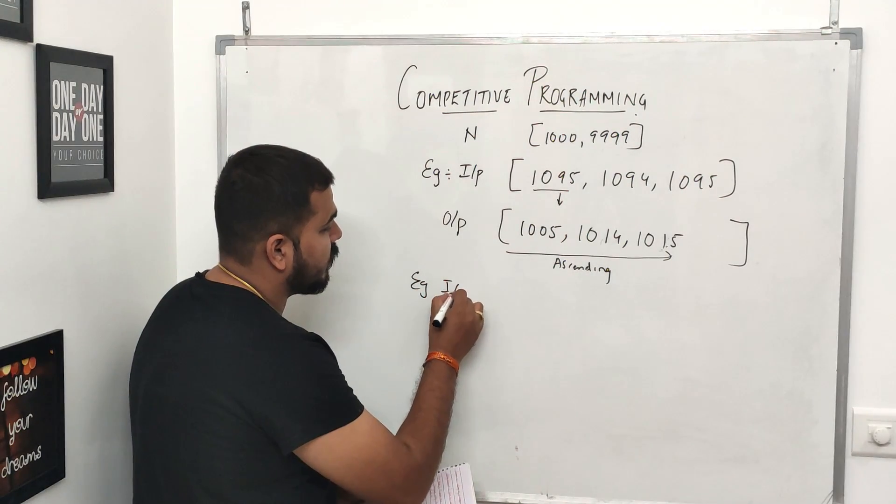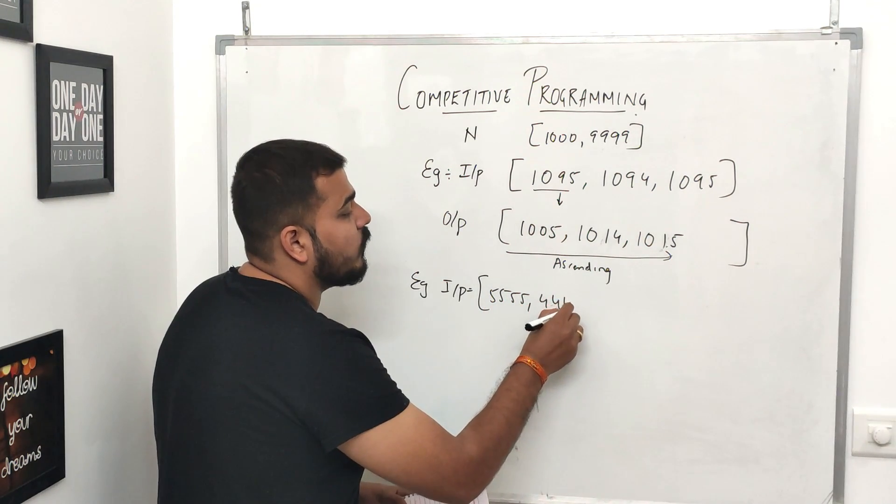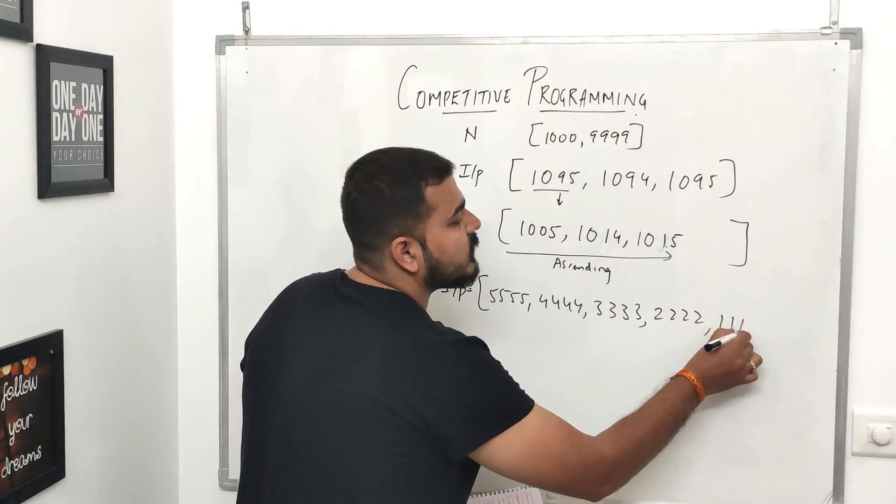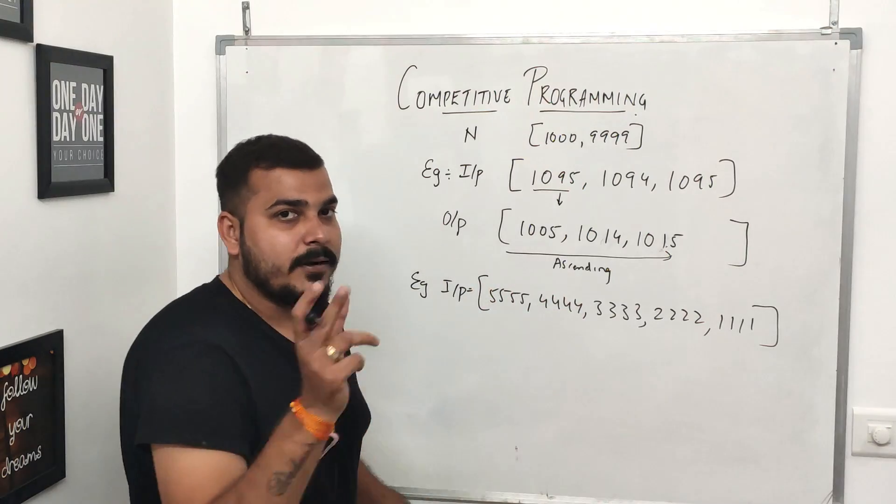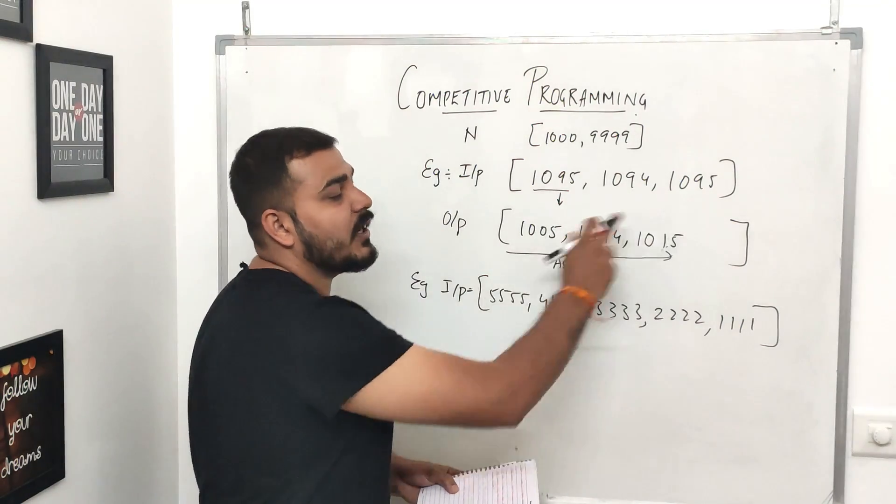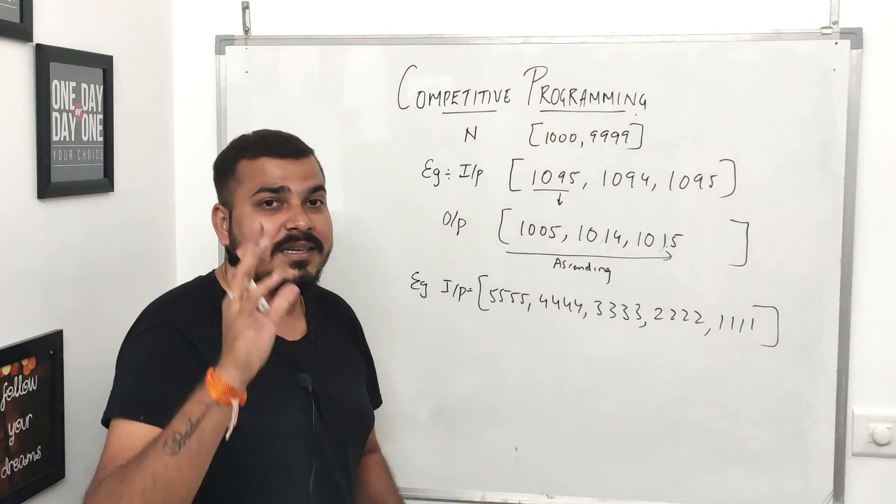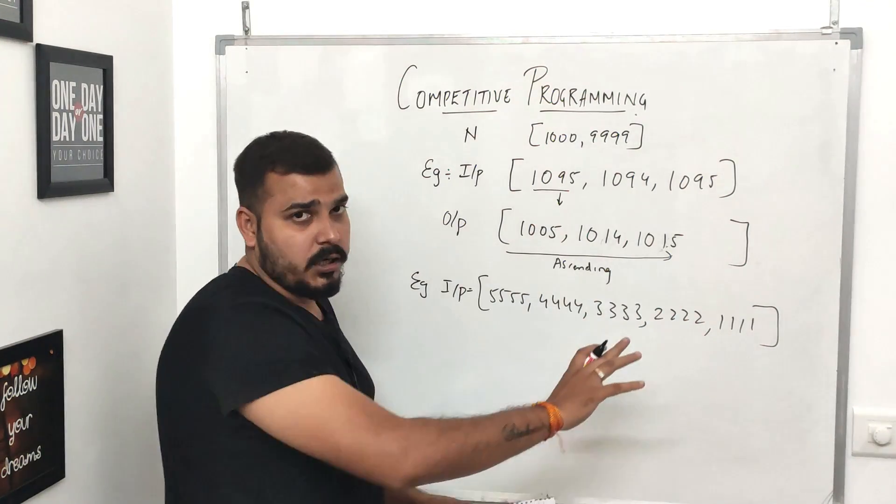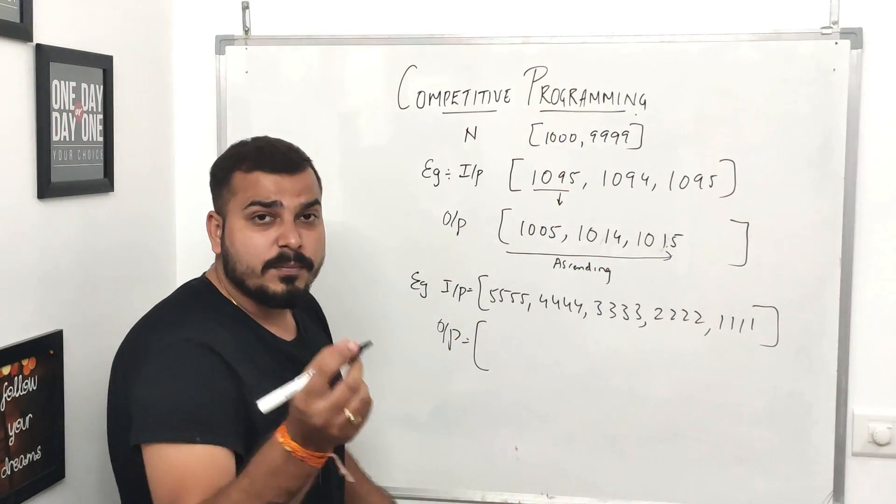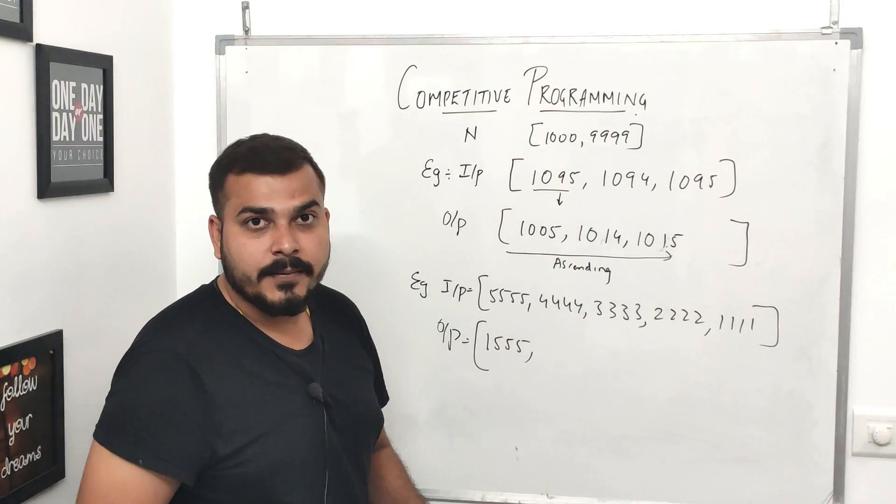Suppose my input is 5555, 4444, 3333, 2222, and 1111. Now I should be able to write a problem statement or code in such a way that I should be able to convert this like how I have actually converted into this. I have to basically write a generic code. Now in this particular scenario, you can see my input is in descending order from largest to smallest.